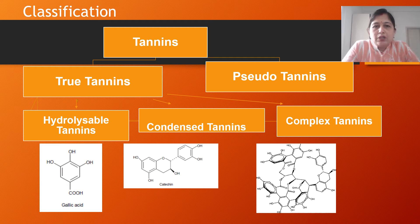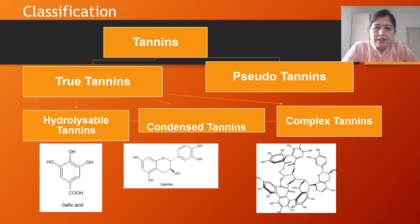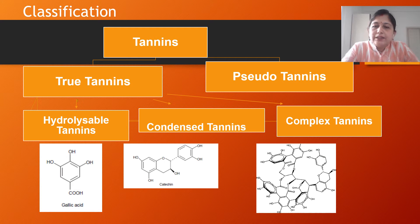Now we move to the classification of tannins. Tannins are first categorized as true tannins and pseudo tannins, and true tannins are further categorized as hydrolyzable tannins, condensed tannins, and complex tannins.